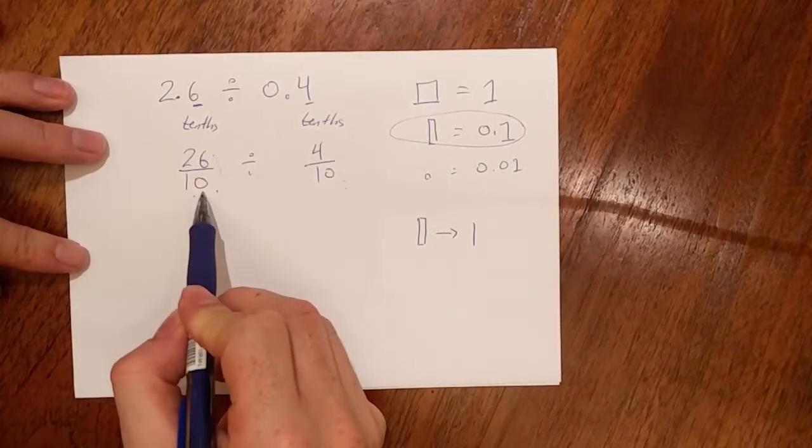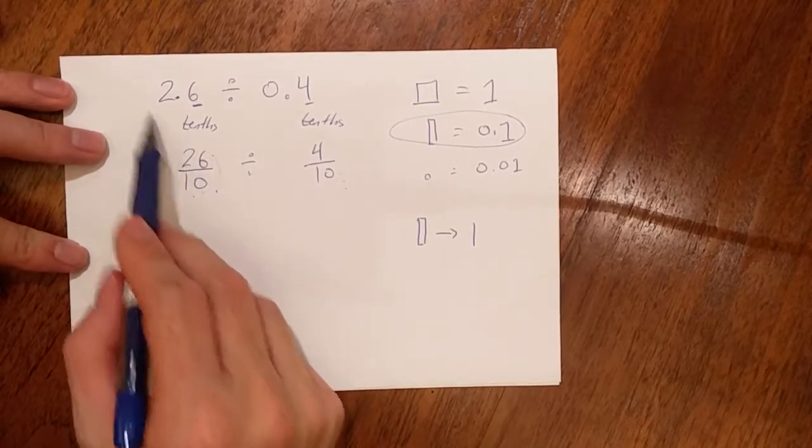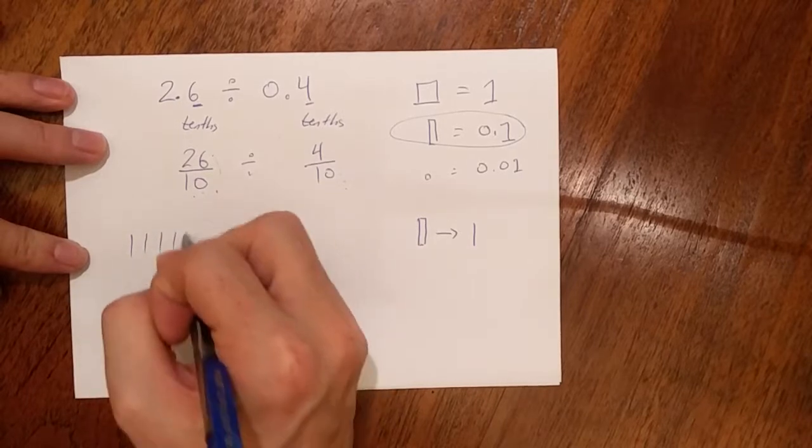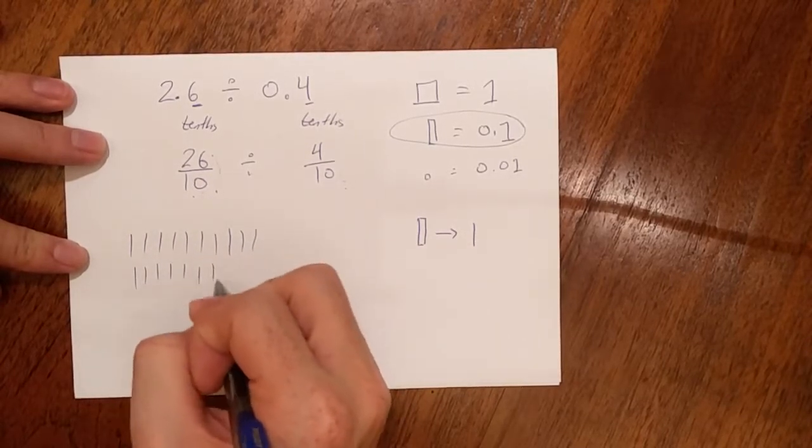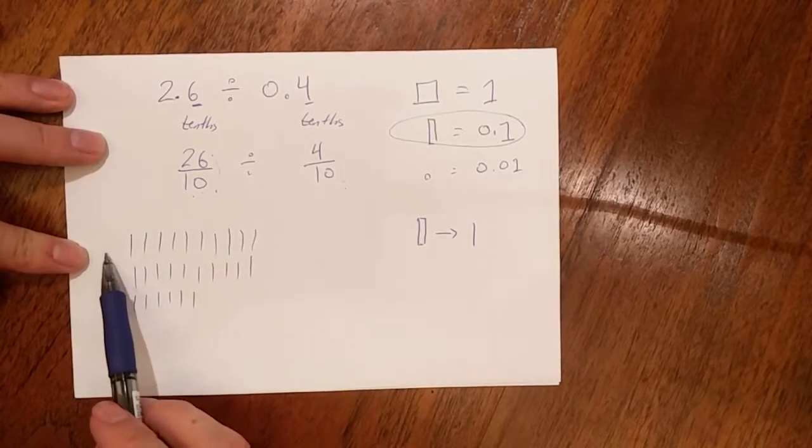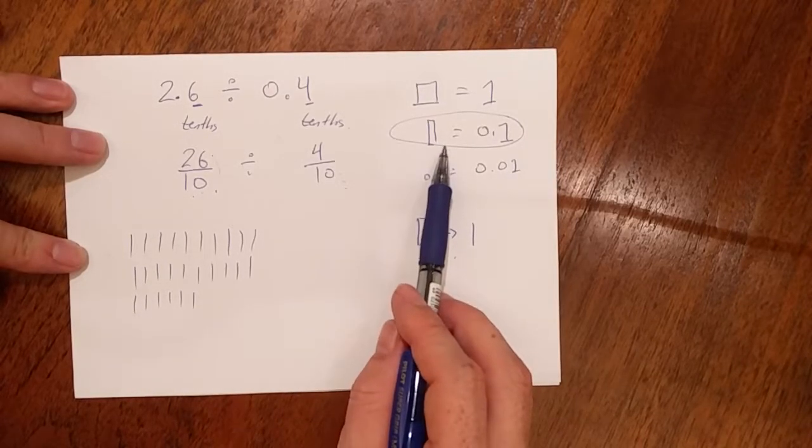So over here, let's draw a model. I have 26 tenths. So how many of these do I have? I have, well, 26 of them. I've got 26 tenths. I can draw them out. Here we go. One, two, three, four, five, six, seven, eight, nine, ten. One, two, three, four, five, six, seven, eight, nine, twenty. One, two, three, four, five, six. Okay, here we have it. Ten, twenty, six. Twenty-six tenths. Twenty-six tenths.